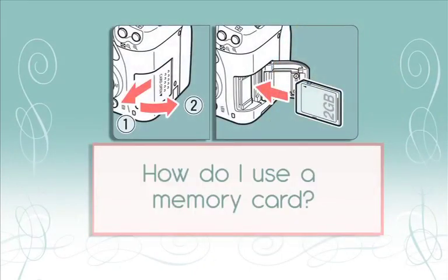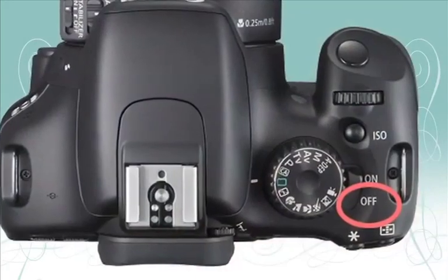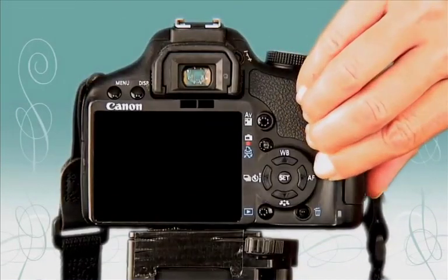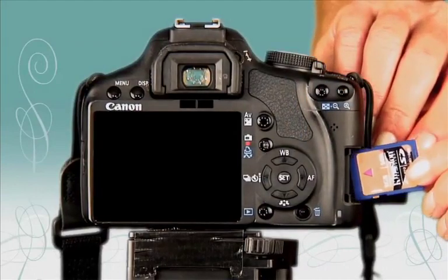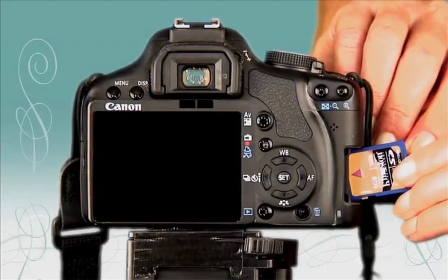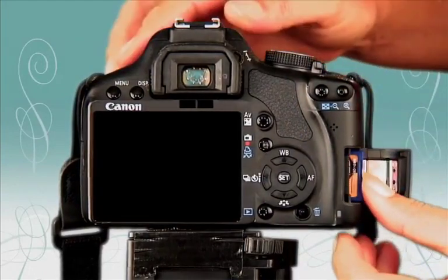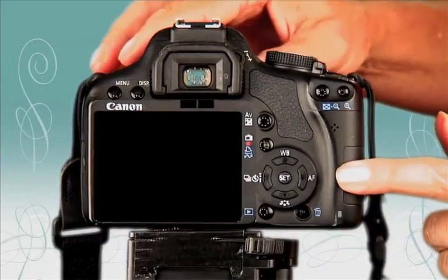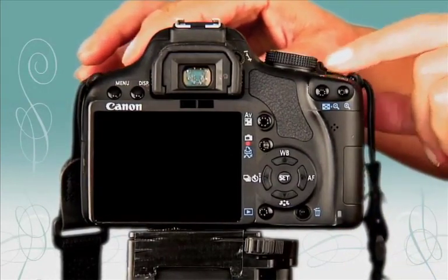How do I use a memory card? Before you insert or remove a memory card from a camera, make sure the camera is turned off — otherwise you may damage your card and the images. Open the memory card door, carefully insert the memory card into the slot, and make sure it clicks into place. Close the door and turn on the power to your camera.